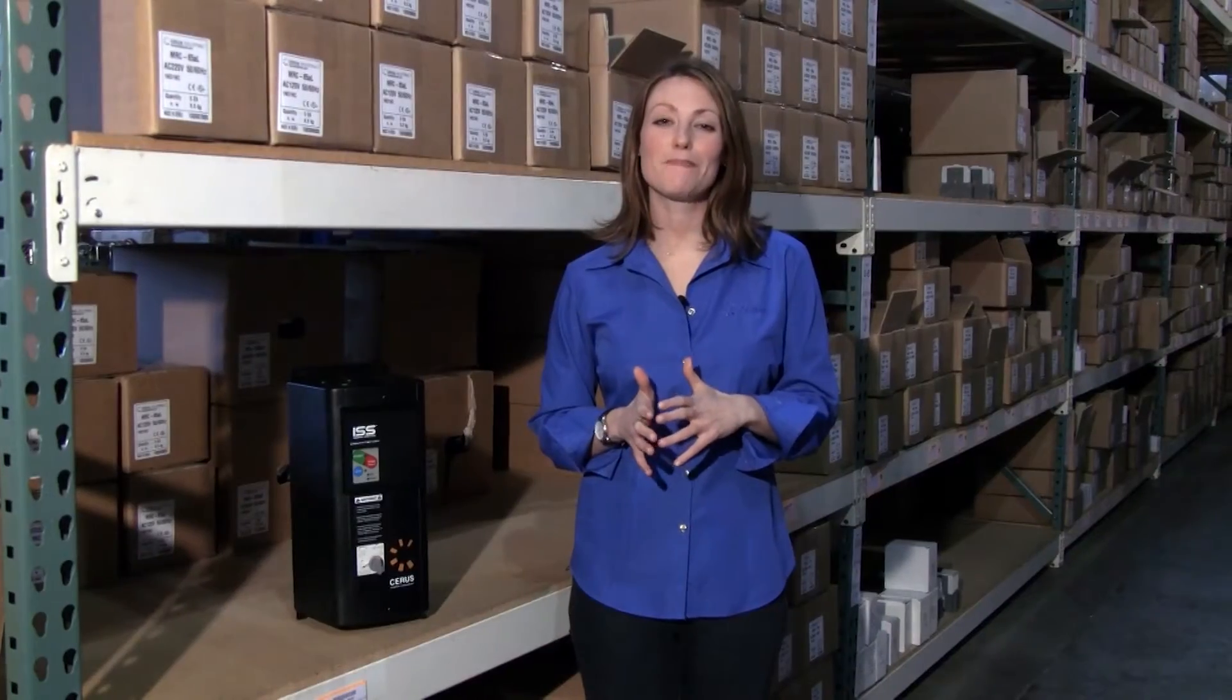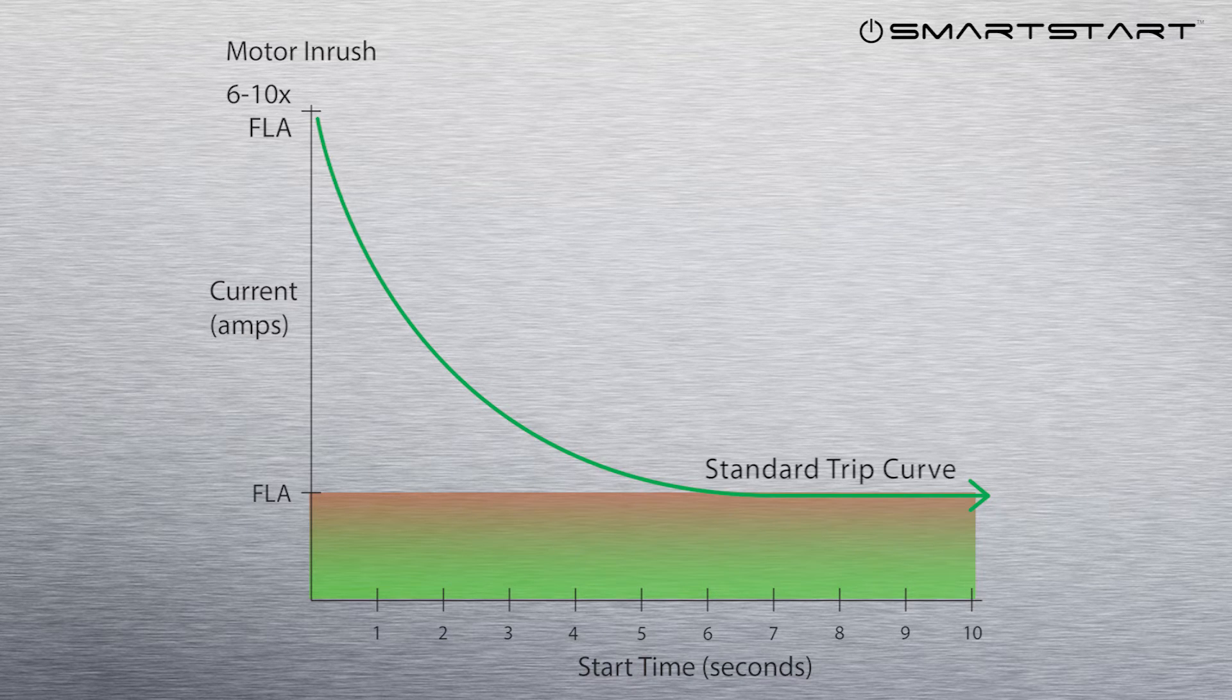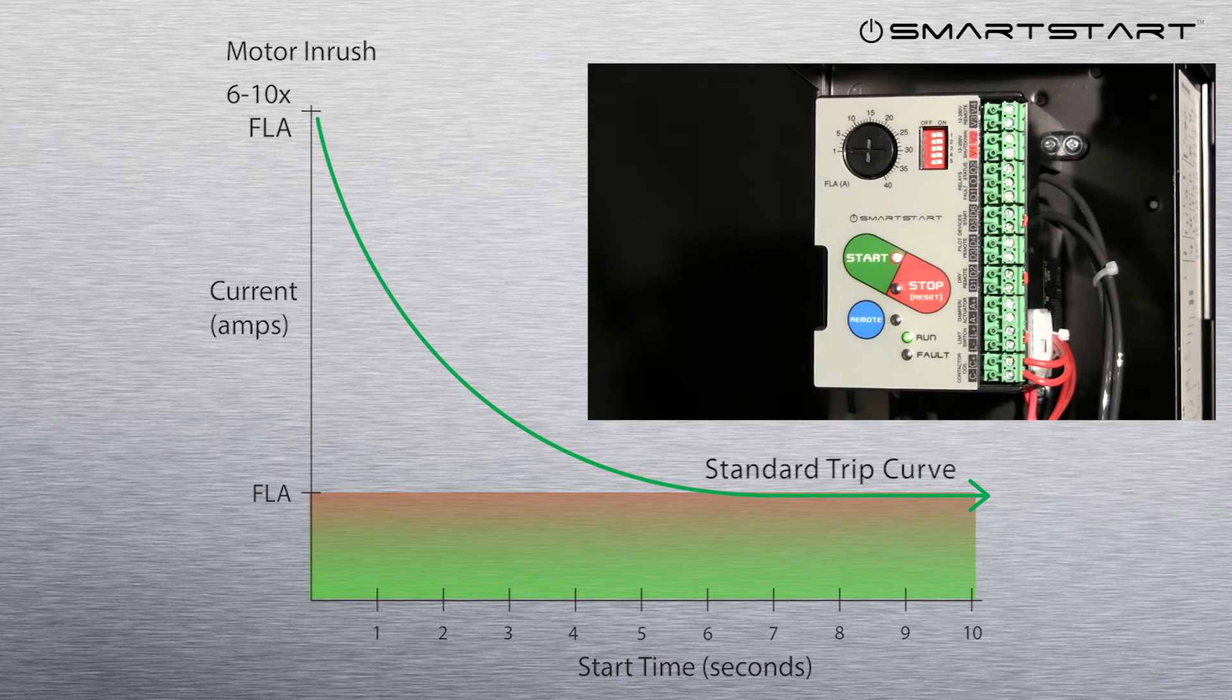Smart Start patent-pending technology protects your motor like no other controller can. First, it looks for a safe operating range based on the motor inrush current. If the starter's overload isn't set within range, it alarms and trips, noting that it needs to be properly adjusted.